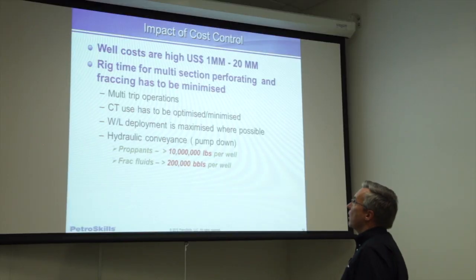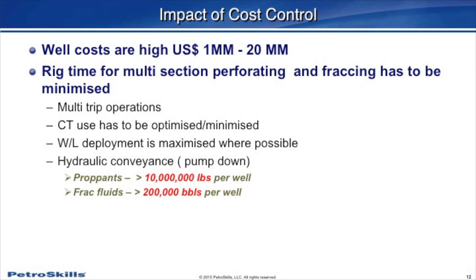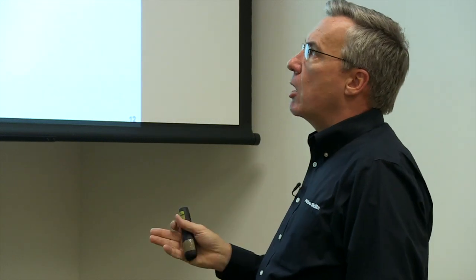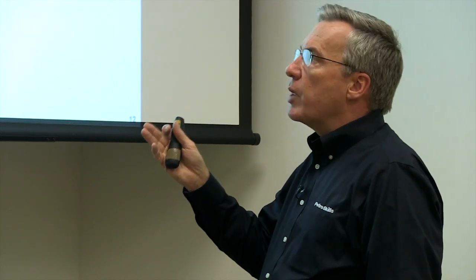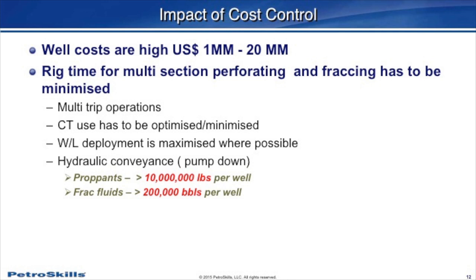This slide is entitled Impact of Cost Control. Drilling and completion costs for these wells vary from several million up to 20 million dollars. We have to minimize our rig time and make our completion as efficient as possible. To do that, we push as much of the intervention to wireline as we can — deploying wireline to pump tools downhole for perforating, setting plugs, and so forth — which saves a great deal of money over coil tubing or a conventional workover rig.